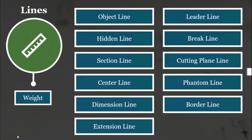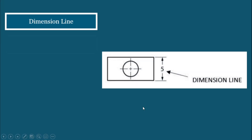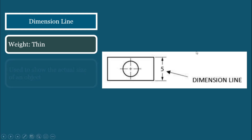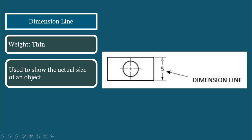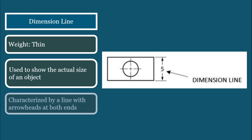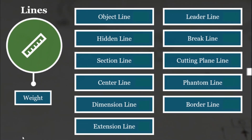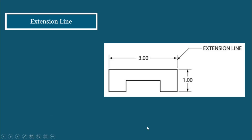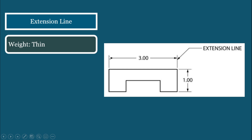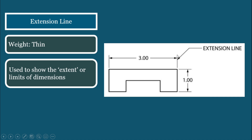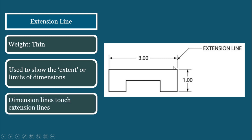The next type of line is what we call the dimension line, which are also thin lines. These lines are used to show the actual size of an object — for example, it indicates 5, and if the note on the drawing says all units are in inches, then this means the length of this side is 5 inches. It is characterized by a line with arrowheads on both ends. The partner of a dimension line is what we call the extension line, which are also thin lines used to show the extent or limitation of lengths. Dimension lines touch extension lines, just like what you see in the picture.